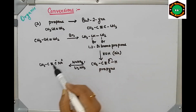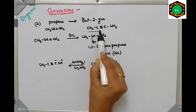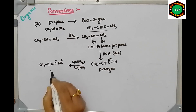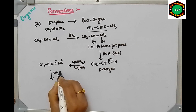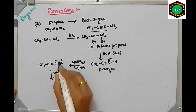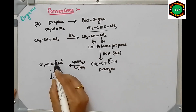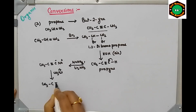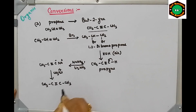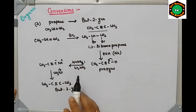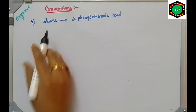Now we have to insert a CH3 group. Treat the sodium acetylide with CH3Cl. The C⁻ acts as a nucleophile and will attack the CH3Cl — nucleophilic substitution takes place. We will get CH3-C≡C-CH3, which is our desired but-2-yne.